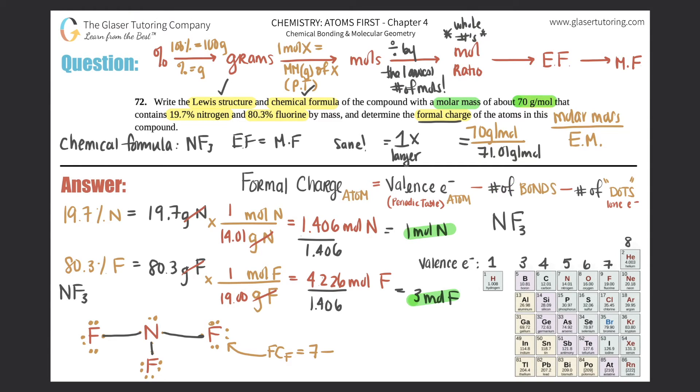We always start with the valence electrons, which is found on the periodic table. Fluorine has seven valence electrons. So seven minus number of bonds, this fluorine only has one bond, so seven minus one minus the number of dots. Around this fluorine you have 1, 2, 3, 4, 5, 6 electrons, so minus six. That would be equal to zero, which means this fluorine would be neutral.